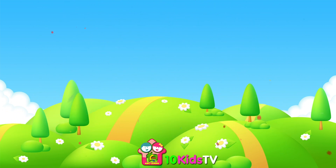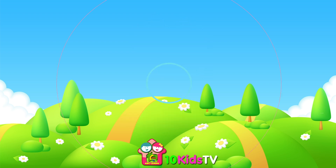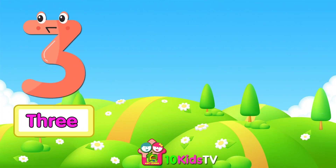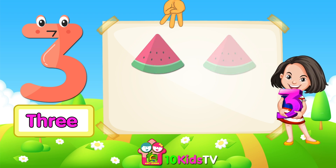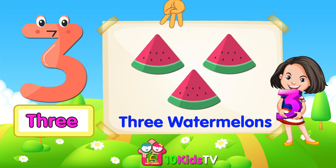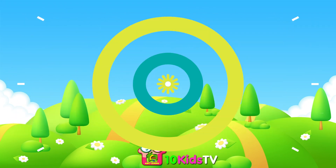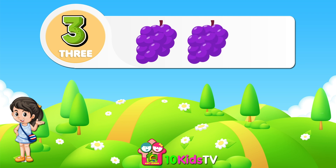Next number is 3. Number 3. 3 watermelons. Example of the number 3. 1 grape, 2 grapes, 3 grapes.